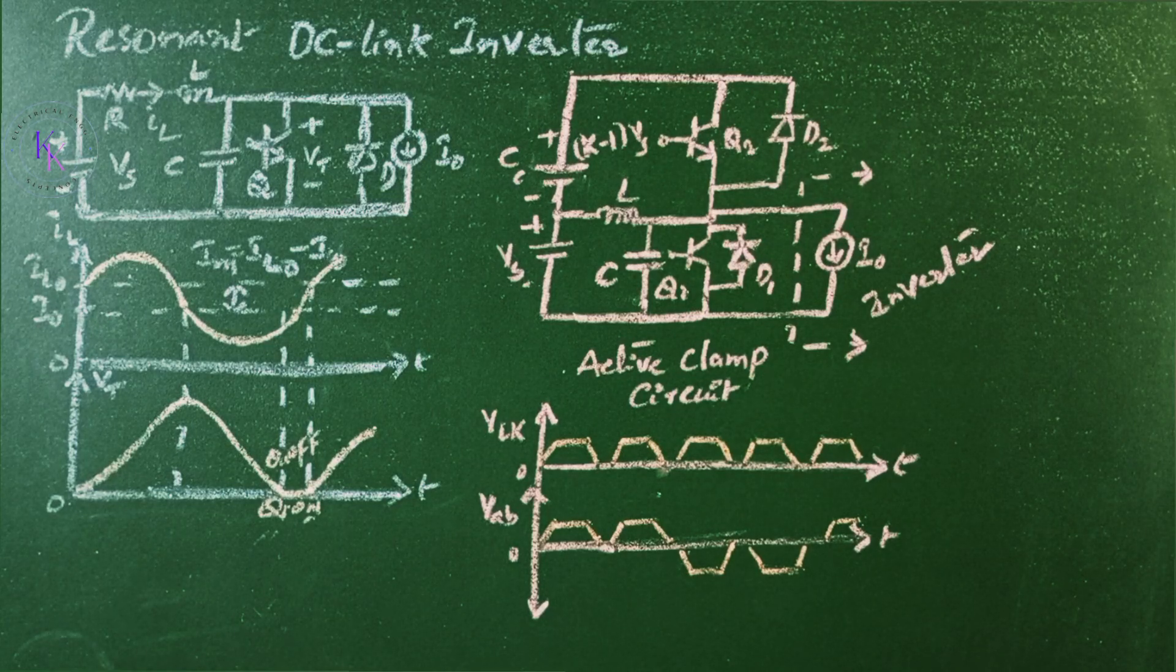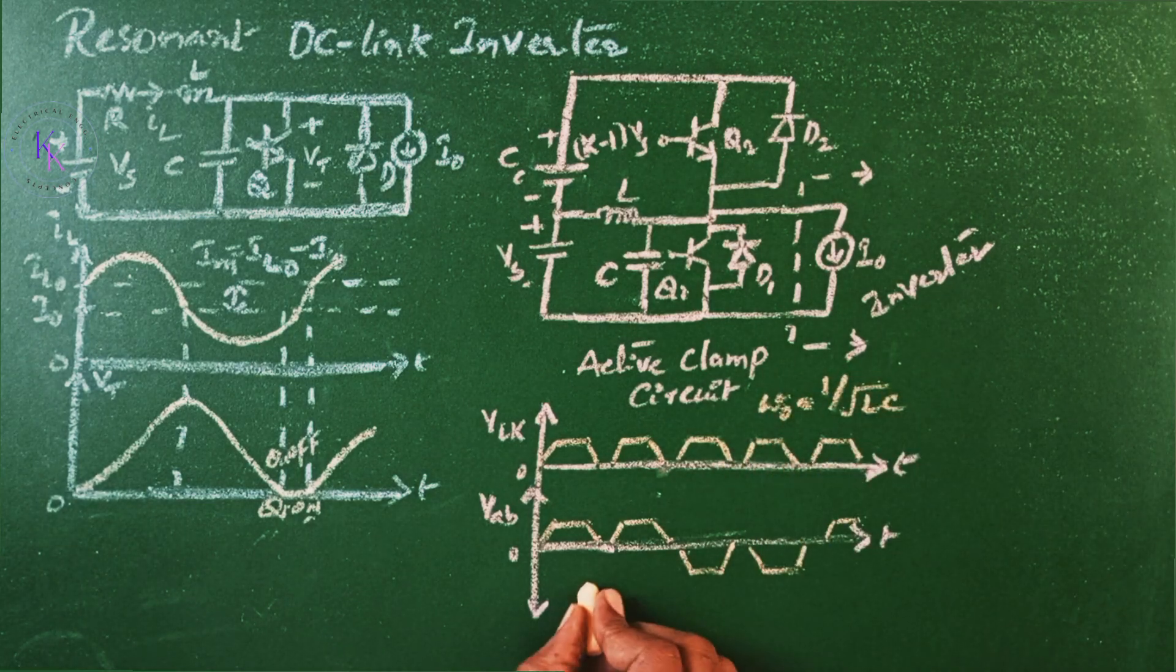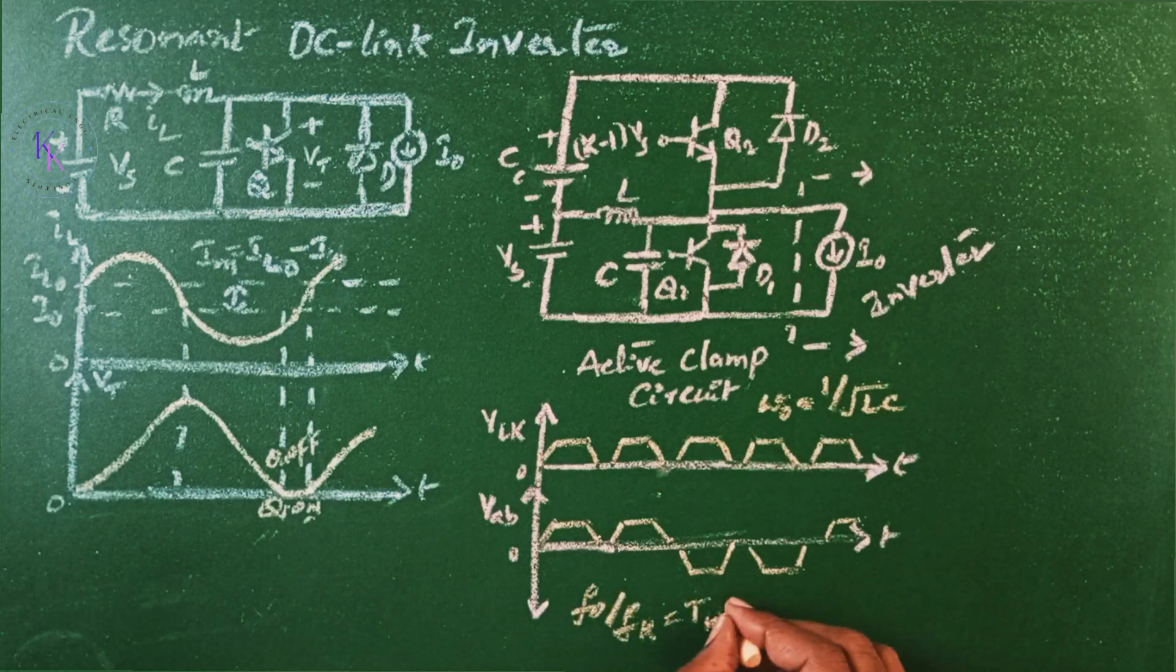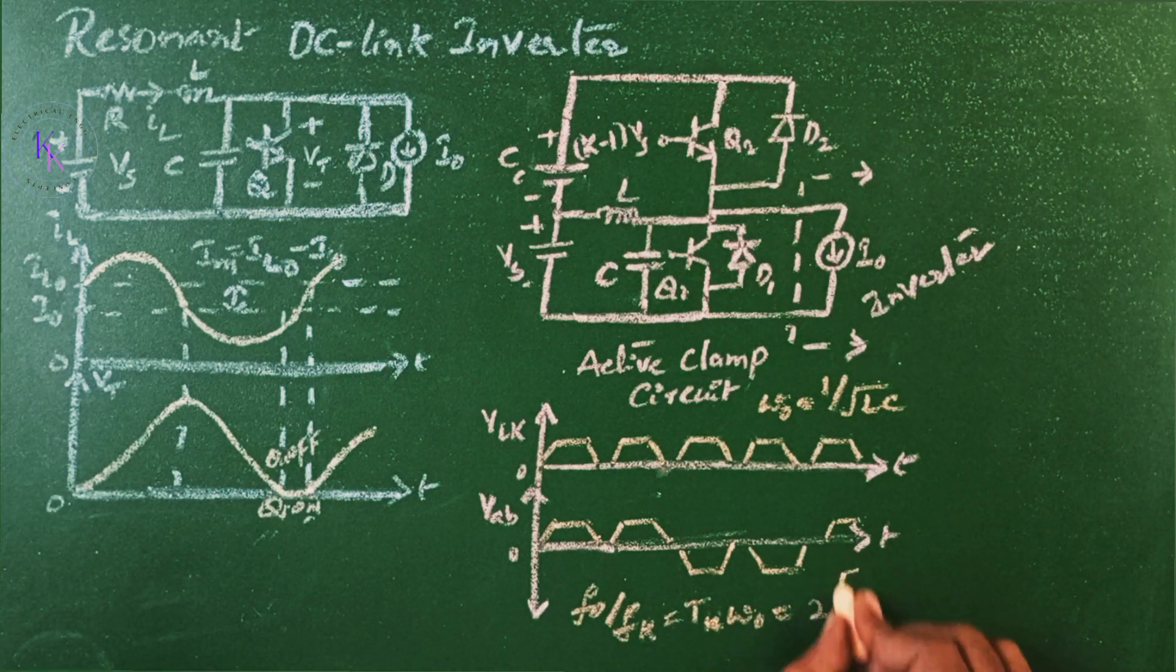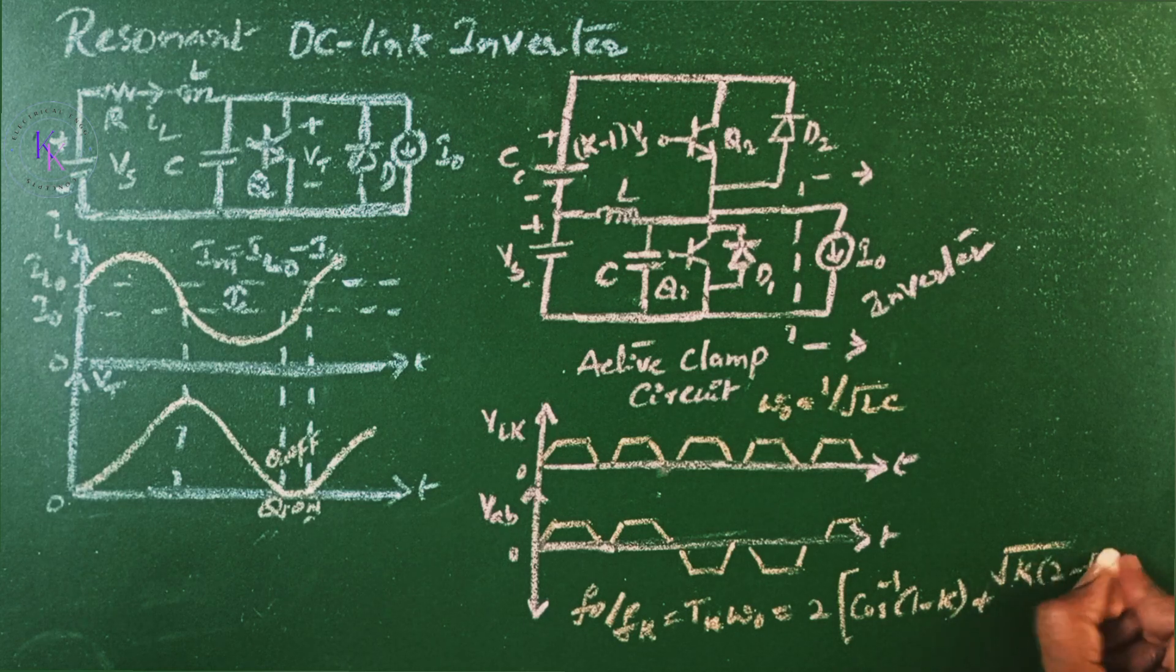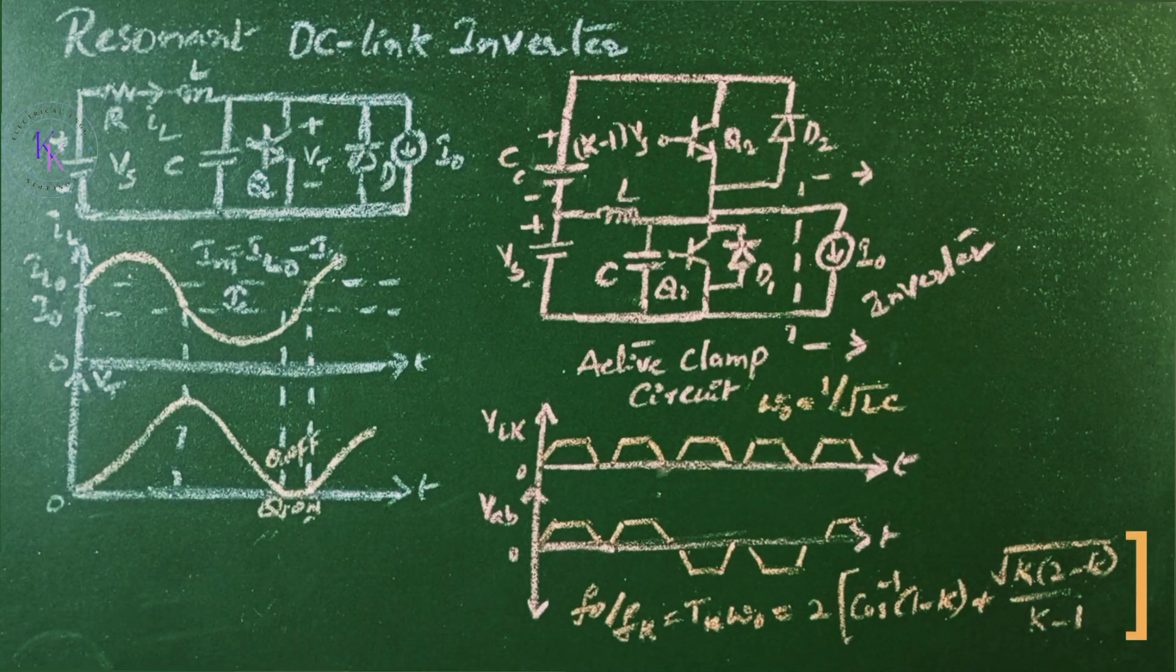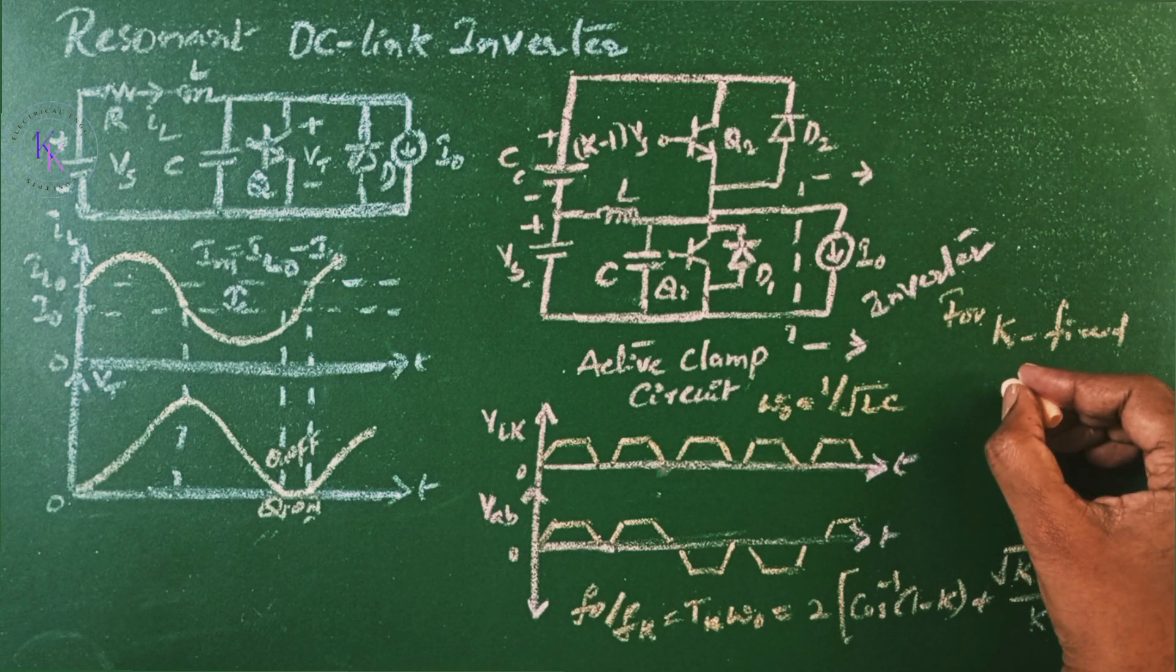The clamp factor k is related to the tank period Tk and resonant frequency omega 0 equals to 1 divided by root LC. The relationship Tk times omega 0 is given by 2 times cos inverse (1 minus k) plus square root of k(2 minus k) divided by (k minus 1). That is, for a fixed value of k, Tk can be determined for a given resonant circuit.